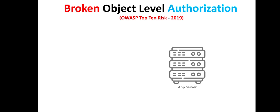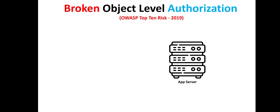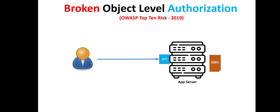This is an application server hosting a resource. A user wants to access this resource by using the application programming interface of this application server. We can call this resource an API endpoint, since it serves or responds to the user.